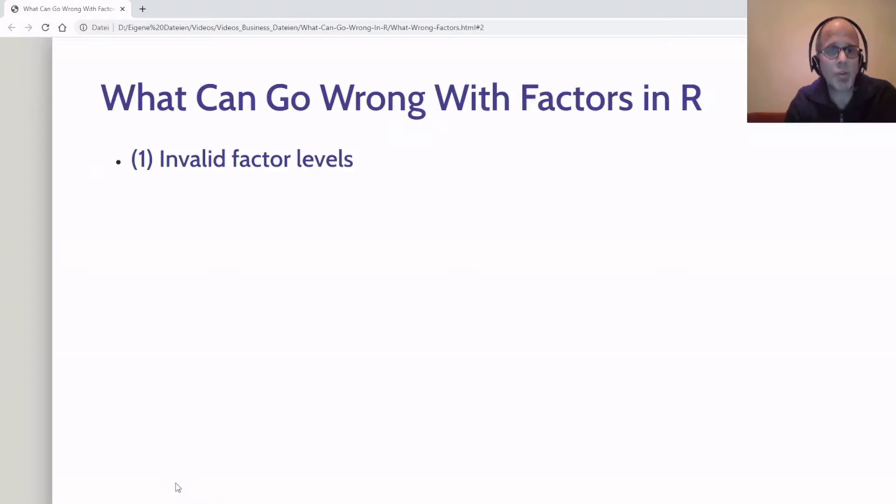There are three issues we want to talk about today. First is a warning about invalid factor levels—we'll see an example and how to get around that. Second, we can recode factors in the wrong way, so we'll do that and see how we can solve it.